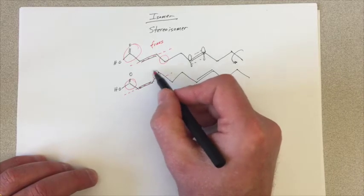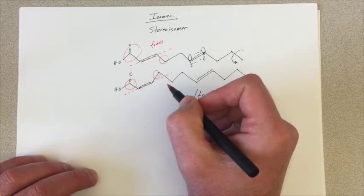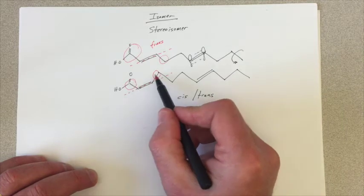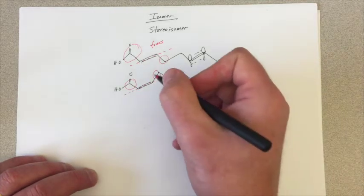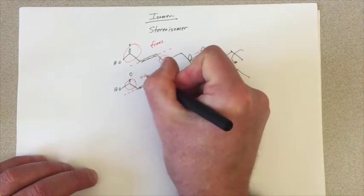This carbon, this alkyl chain, beats the other hydrogen. And in this case, we've seen that the two interesting things are on the same side of that double bond. So we call that a cis.